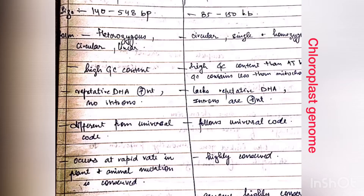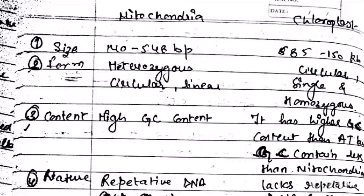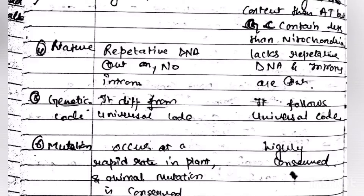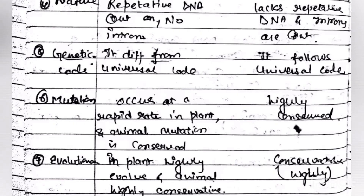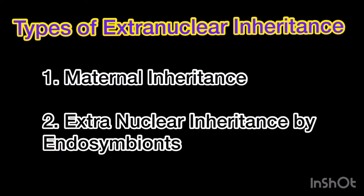A tabular comparison between mitochondria and chloroplast genome has been provided. The main difference is size: in mitochondria the size is 140 to 548 base pairs, whereas in chloroplast it is 85 to 150 kilobase pairs. Corn has 20 to 40 chloroplasts per cell, with each chloroplast having 20 to 40 chromosomes, making up approximately 15 percent of the DNA.